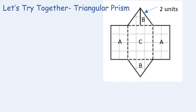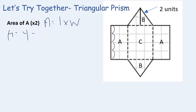Let's find the surface area of the triangular prism. This is the net of a prism with two triangular faces; when folded up, the bases are triangles. We're first going to find the area of the rectangle faces labeled A. The area of a rectangle is length times width: the length is 4 and the width is 2, so 4 times 2 is 8 square units. Both faces labeled A together are 16 square units.